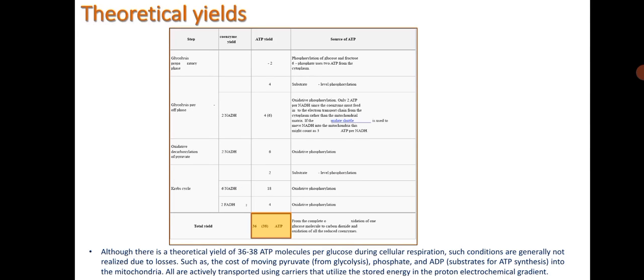The theoretical yield of total ATP molecules is 36 or 38. Although there is a theoretical yield of 36 to 38 ATP molecules per glucose during cellular respiration, such conditions are generally not realized due to losses, such as the cost of moving pyruvate from glycolysis, phosphate and ATP, i.e. substrates of ATP synthesis, into the mitochondria. All are actively transported using carriers that utilize the stored energy in the proton-electrochemical gradient.